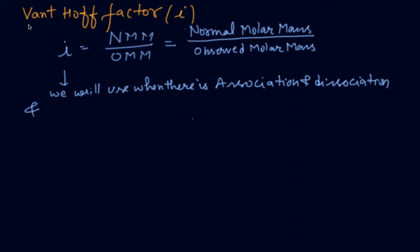The Van't Hoff factor i is used to find out the abnormal molecular mass. The simple formula is: i = normal molecular mass divided by observed molecular mass. We use i when there is an association or dissociation taking place in a solution.